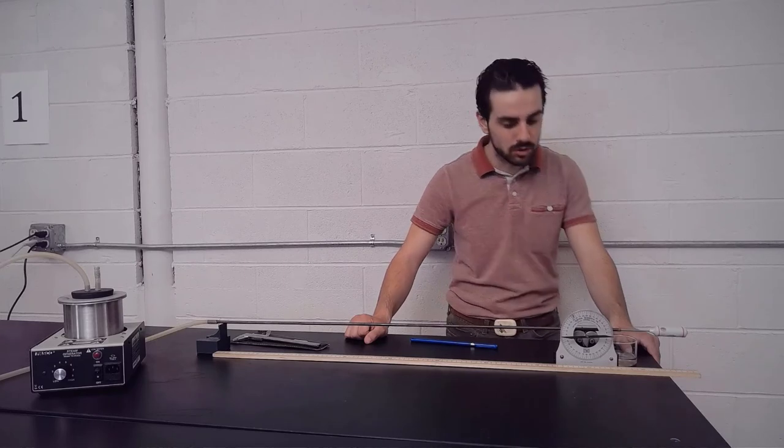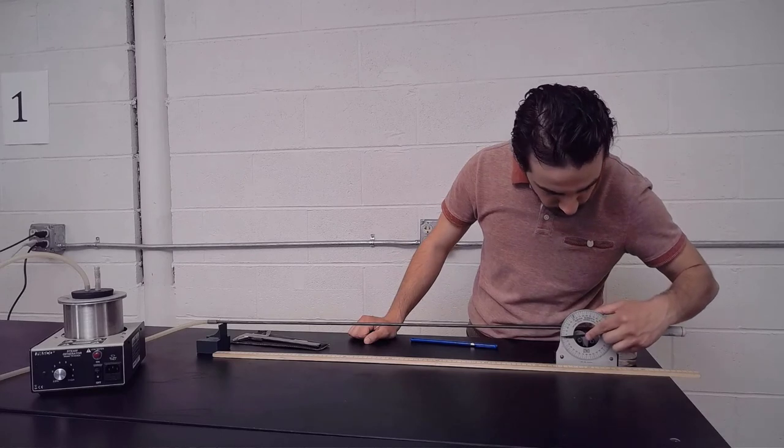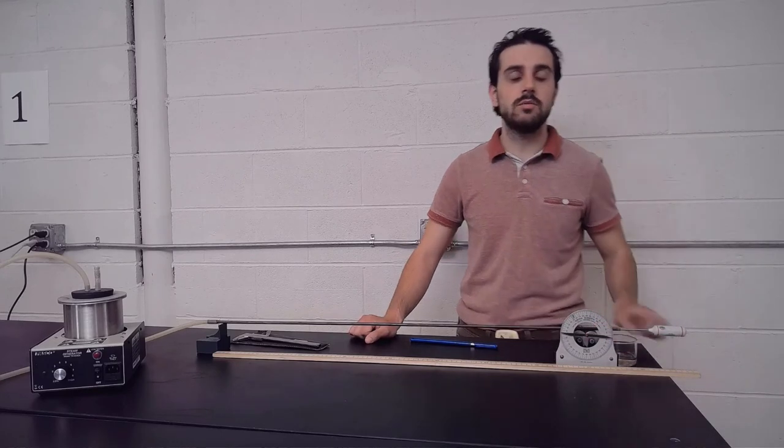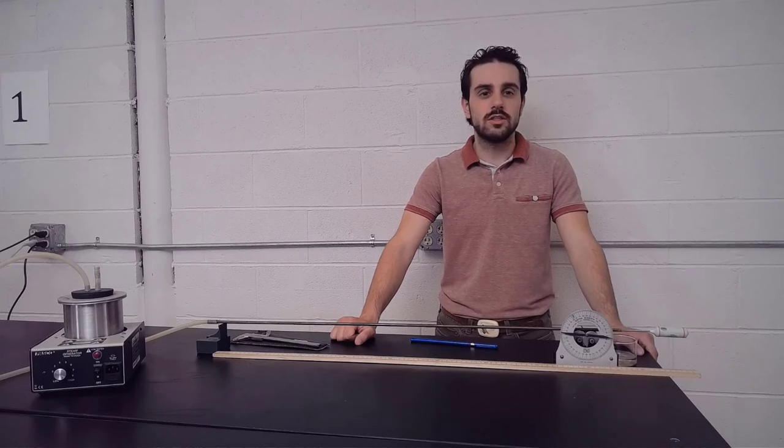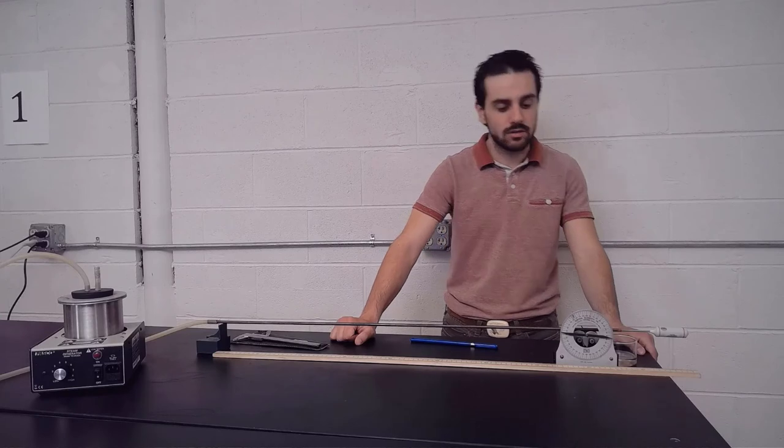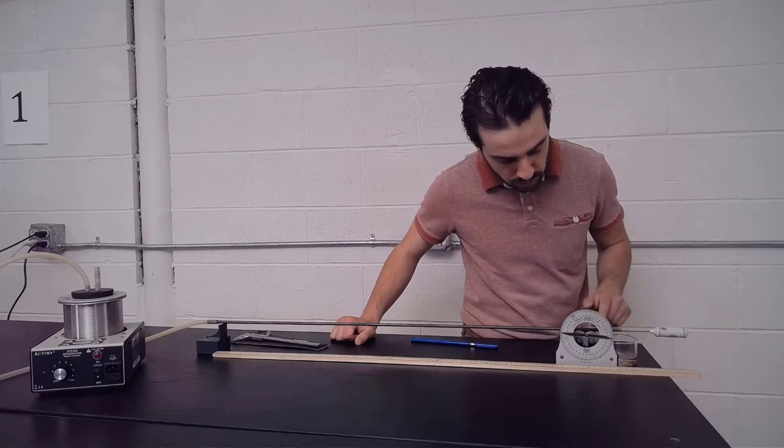Now we'll turn our protractor to zero degrees and turn off our steam generator. Once the steam generator is turned off, the metal rod will contract and will spin the axle on our protractor.